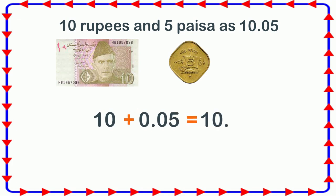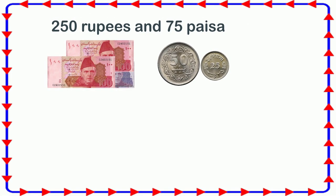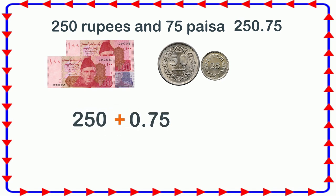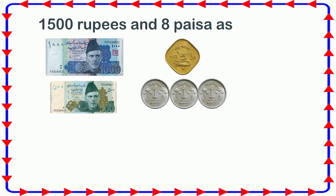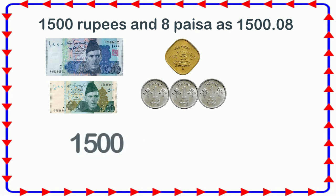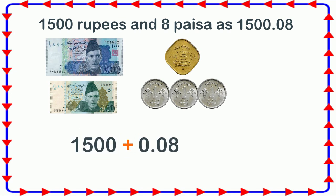Two hundred and fifty rupees and seventy-five paisa is written as 250.75, because 250 plus 0.75 is equal to 250.75. One thousand five hundred rupees and eight paisa is written as 1500.08, because 1500 plus 0.08 is equal to 1500.08.